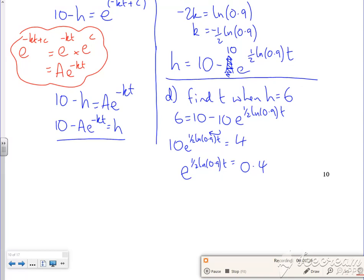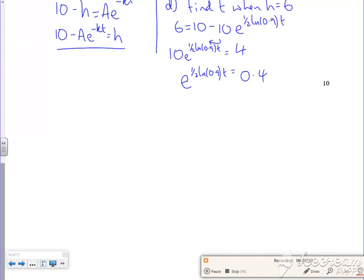How can we do this then? If I take the half up as a, how can I do that? Let's put it in terms of ln. So if I do ln of both sides to get rid of the E, I've got a half ln 0.9T is ln 0.4.